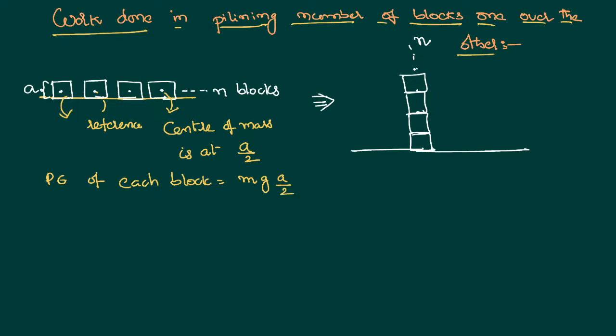Potential energy for each block is equal to MgA by 2. Like that there are n blocks. Therefore total potential energy of the system is nothing but equal to n times MgA by 2.